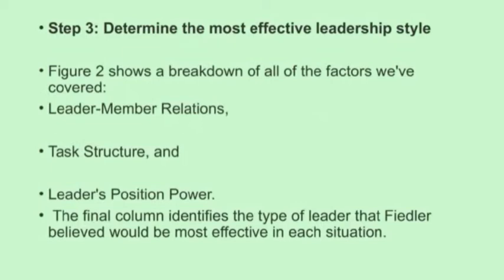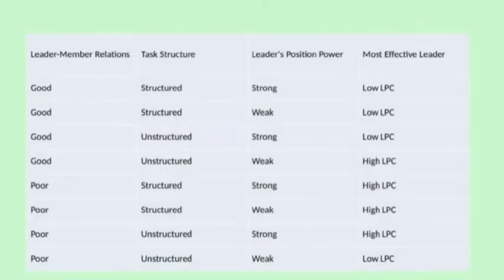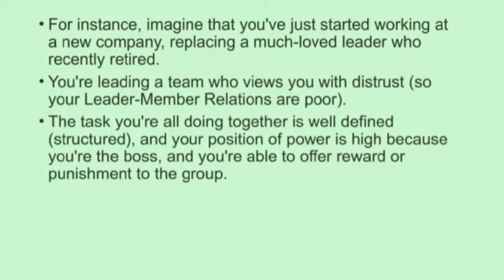Determining the most effective leadership style: the combination of leader-member relations, task structure, and leader's position power identifies the type of leader Fiedler believed would be most effective in each situation. For example, if the task is structured, you have worked on the problem before, and you have strong position power to give reward or punishment, then a low LPC task-oriented leader may be most effective.